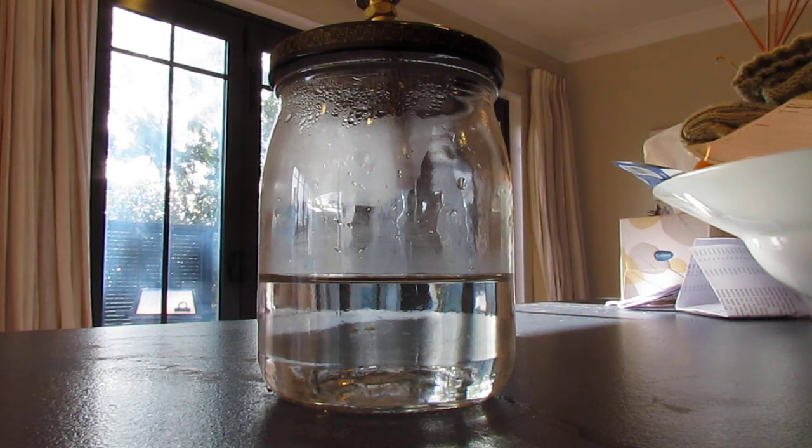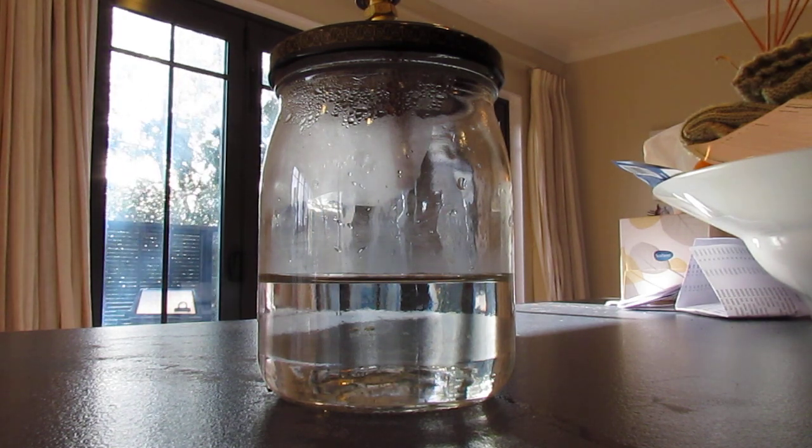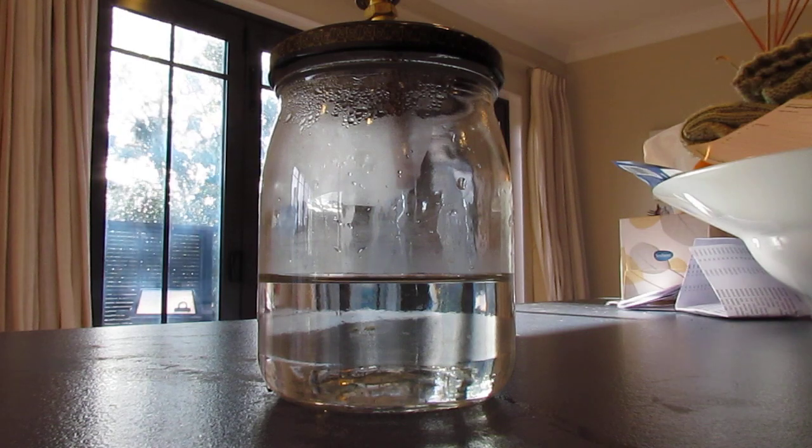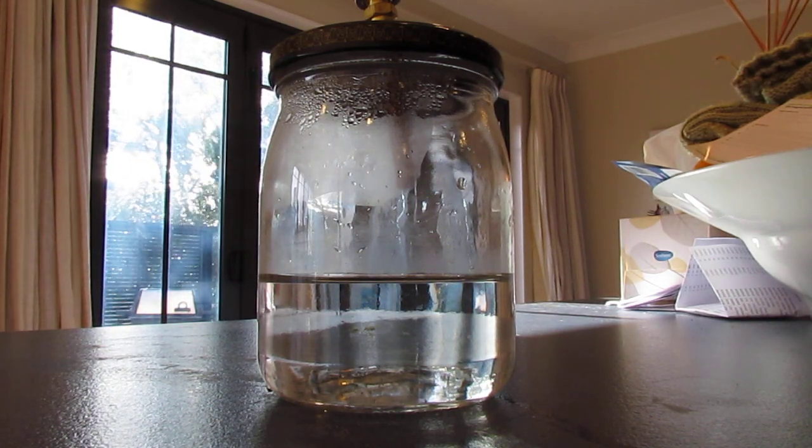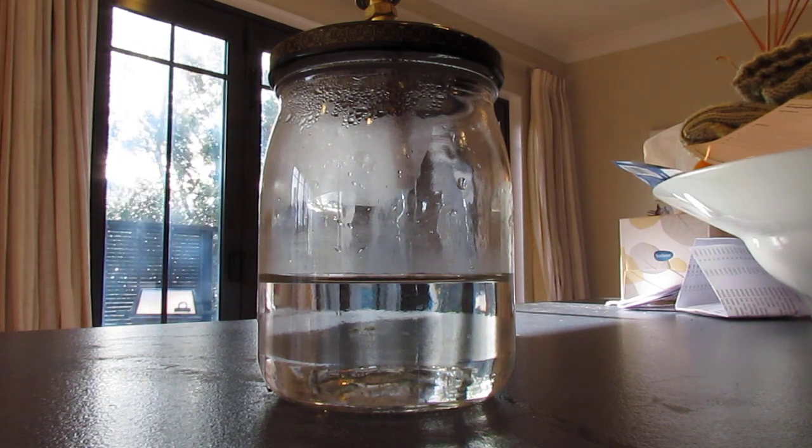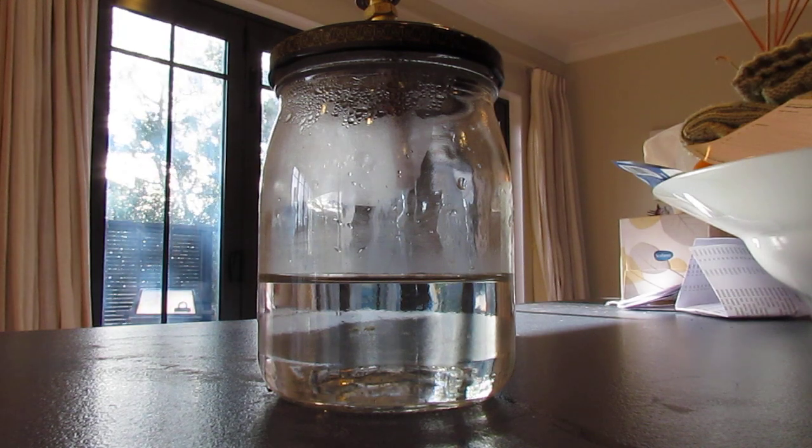But when we go into a refrigeration system, we can actually put a vacuum onto that and lower the pressure, causing moisture to bubble off at room temperature. And so to prove that, I put together this little something you can look at to visually see what happens to moisture in the refrigeration system.